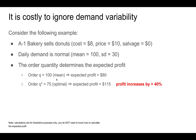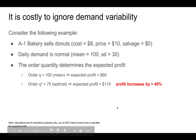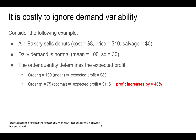If we order the mean demand, which is 100, the expected profit is $80. However, if you order the optimal order quantity, which happens to be 75, you get an expected profit of $115, which is a profit increase of more than 40%. So this example shows that if you take into account demand variability in the right way, for example using the news vendor model, you can make the correct ordering decision, which increases your profit quite dramatically. Please note that these calculations are for illustrative purposes only, and you do not need to know how to calculate the expected profits.